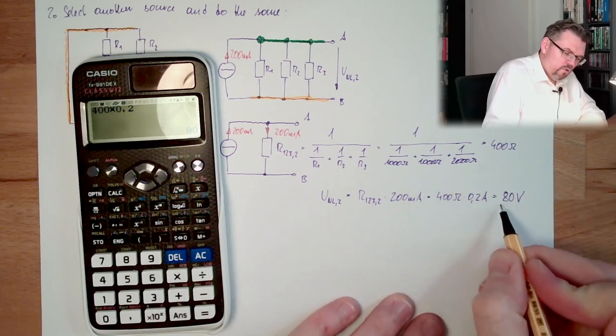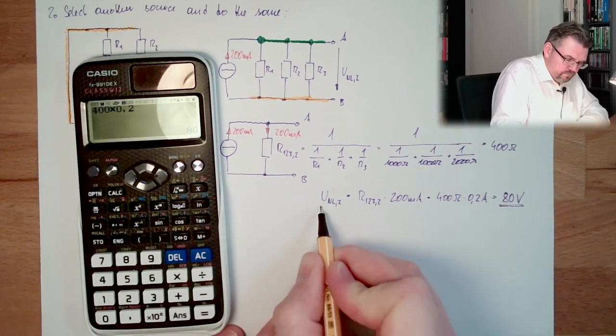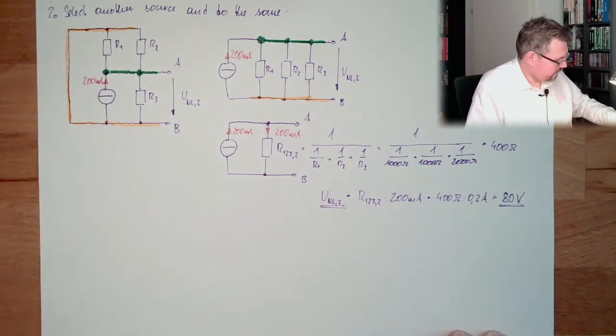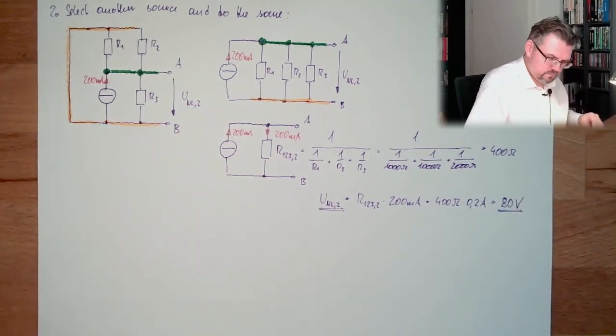Here we have A, here we have B, we are open. So actually, here we have 200 milliamps.